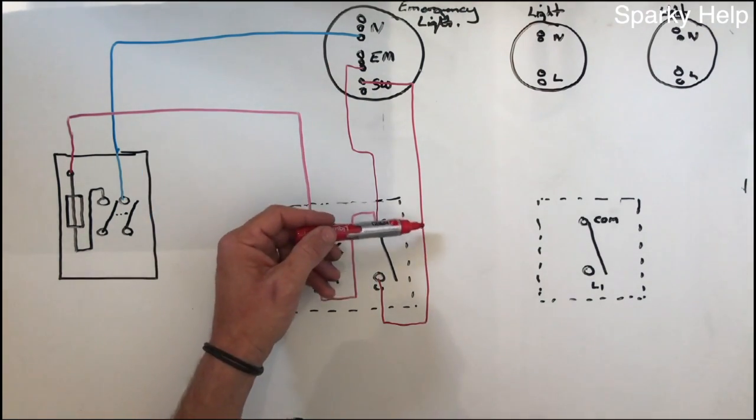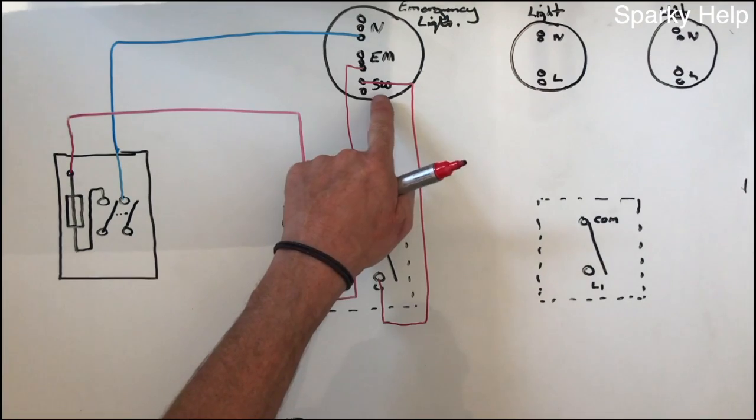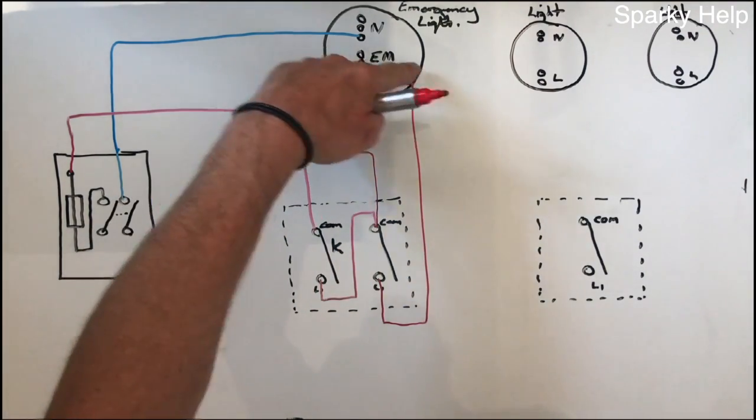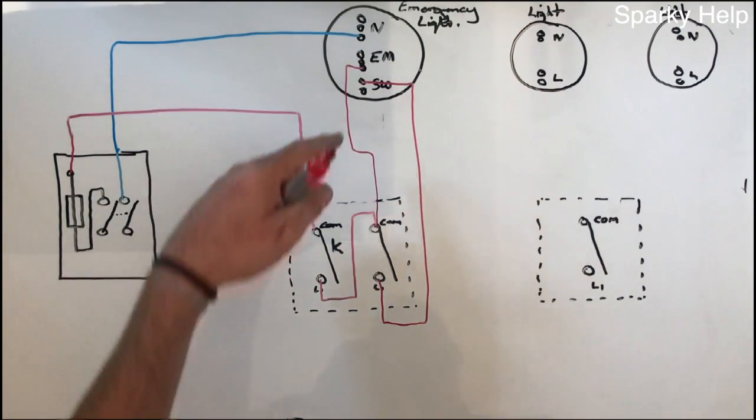So we have a switch line, so when we switch this switch, the light will switch on and off. Providing we have a mains power supply, this will all work. If you lose this power supply, then this will swap over into emergency.